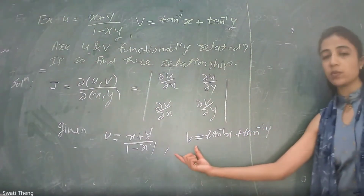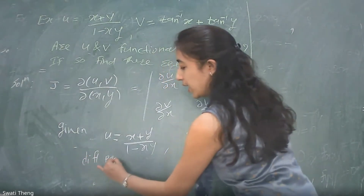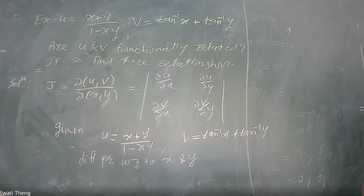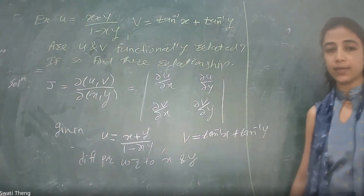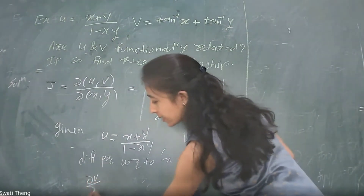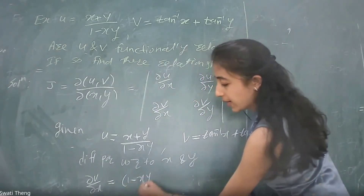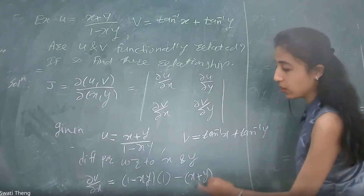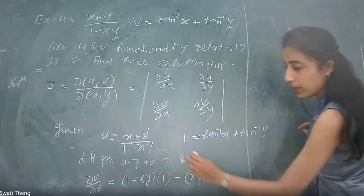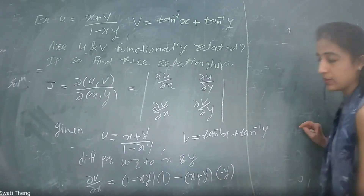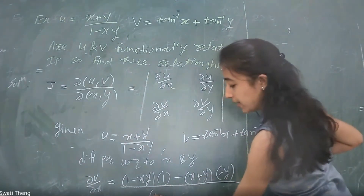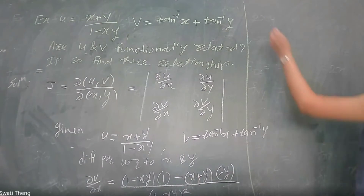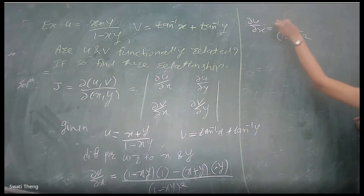Differentiate u partially with respect to x and y. Apply the division rule since both numerator and denominator contain x. So del u/del x equals: (1 minus xy) times derivative of numerator (which is 1), minus (x plus y) times derivative of denominator (which is minus y), all divided by (1 minus xy) squared. Simplifying, del u/del x equals (1 plus y squared) divided by (1 minus xy) squared.